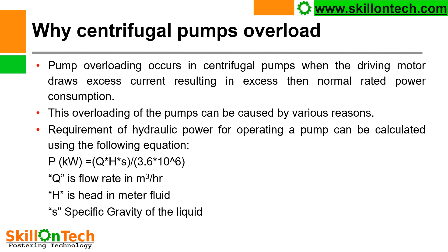The requirement of hydraulic power for operating a pump can be calculated using the following equation: Power (kW) = Q × H × S / (3.6 × 10^6), where Q is the flow rate in m³/hour, H is head in meters of fluid, and S is the specific gravity of the liquid handled by the pump.